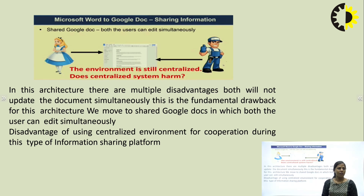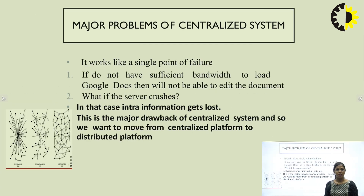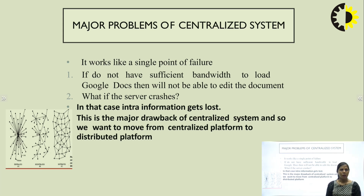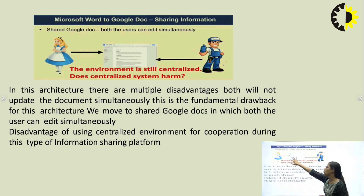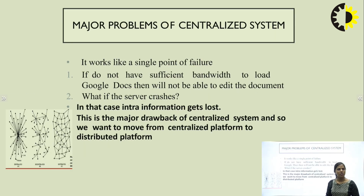In a centralized environment there are major problems. The centralized system, like our banking system, works on a centralized server to which multiple users are connected to share information. Google Docs is also an example of a centralized environment. The major problem of the centralized system is that it works on a single point of failure.